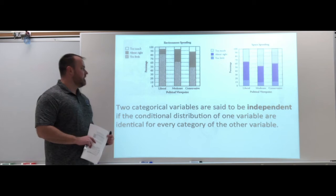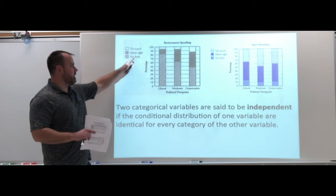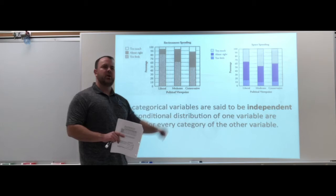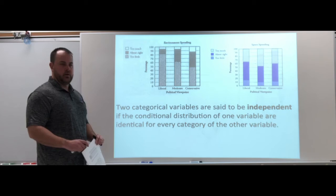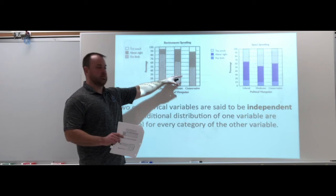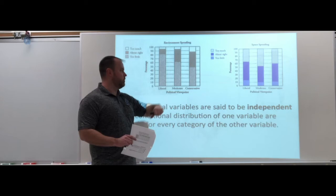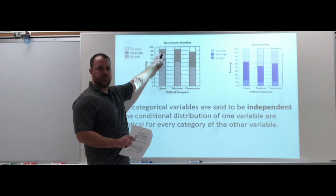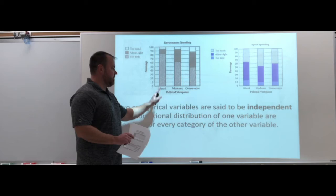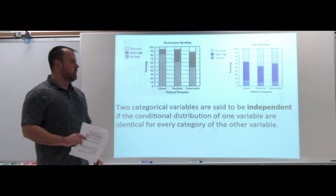Kind of wordy, but what that's saying is if you look at the variable for too much, about right, or too little, each category here for liberal, moderate, conservative, they use the word identical but they have to be similar to each other. If I'm looking at liberals, moderate, conservatives, I think there's a big difference, especially in the too little. Huge difference here, and then it drops a good amount as we go from moderate to conservative. Same thing for about right. There's only a small section here for liberals, that section gets much bigger for moderate, much bigger for conservatives. I would not consider those similar to each other. This would not be independent variables.